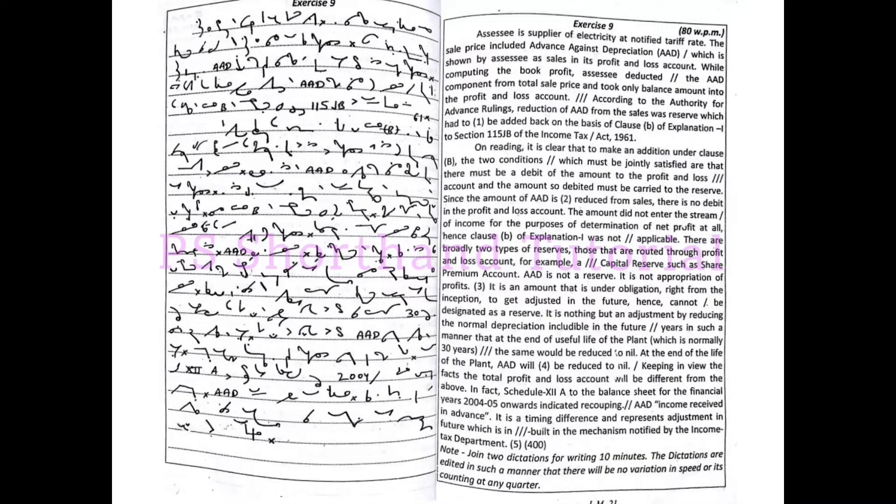The amount did not enter the stream of income for the purposes of determination of net profit at all. Hence, clause of Explanation 1 was not applicable. There are probably two types of reserves.